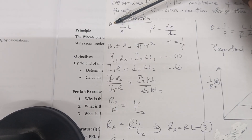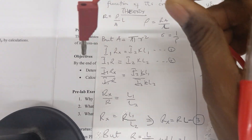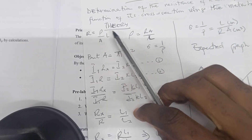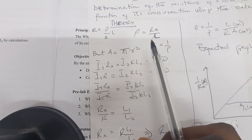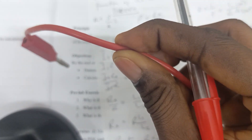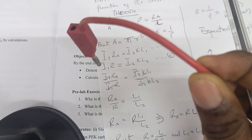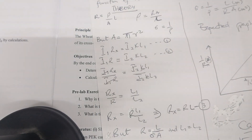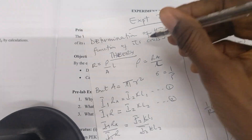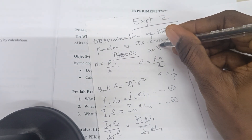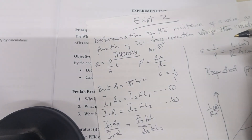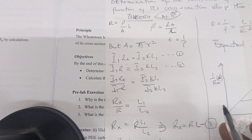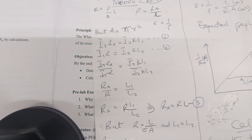First of all, the resistance of a wire depends on three things. One: the length, which is L. The second thing is the cross-sectional area — you measure the diameter of the wire, then divide the diameter by two to find the radius. And then three: the resistivity.